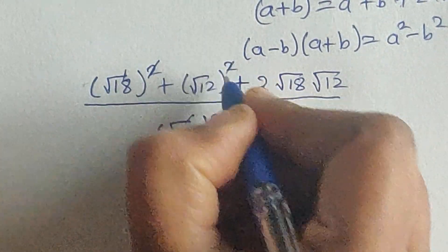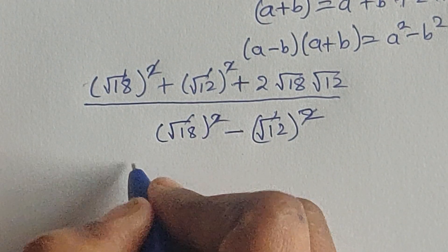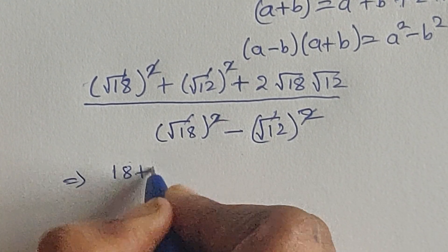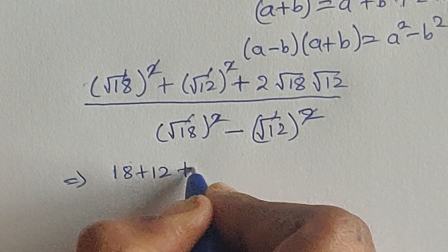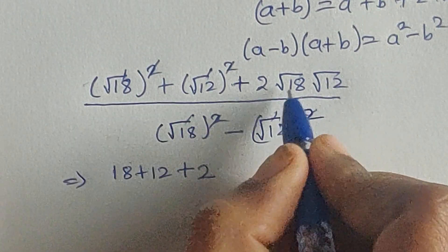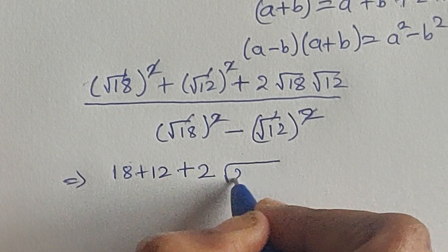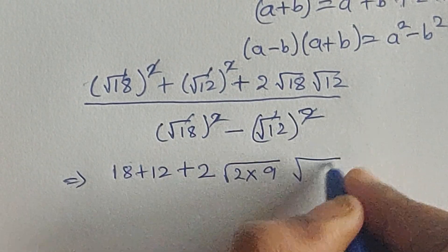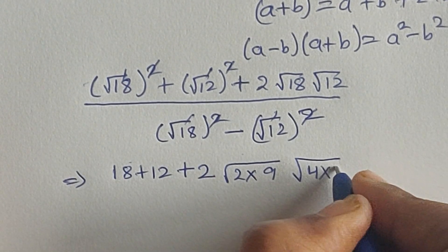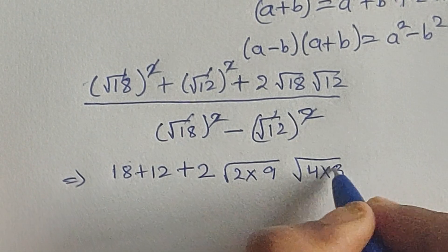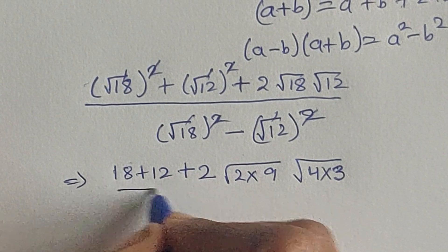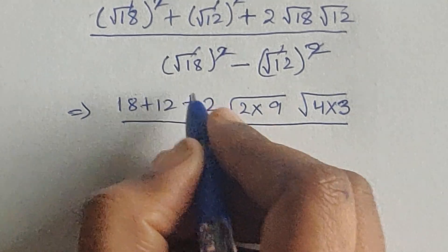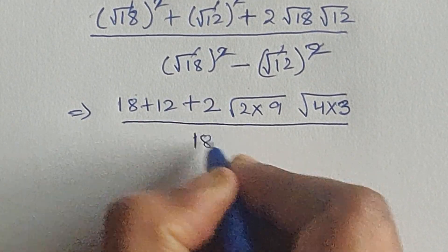After cancellation, the numerator is 18 plus 12 plus 2 times — where square root of 18 we write as square root of 2 times 9, and square root of 12 we write as square root of 4 times 3. The denominator becomes 18 minus 12.